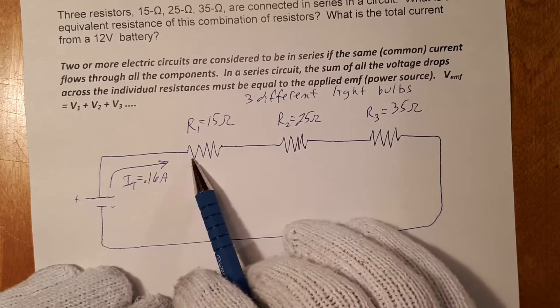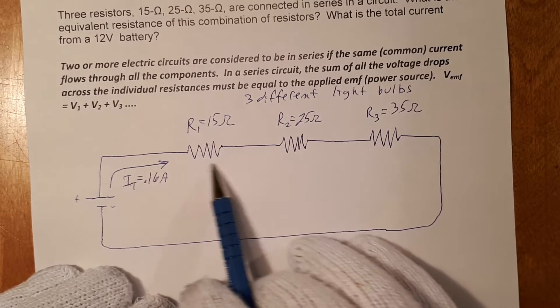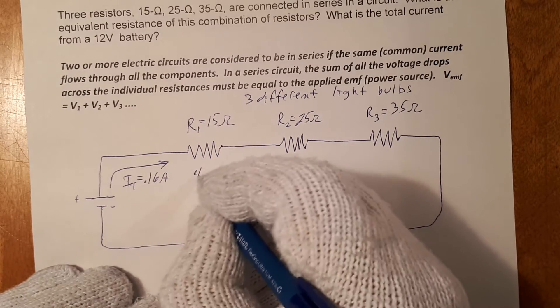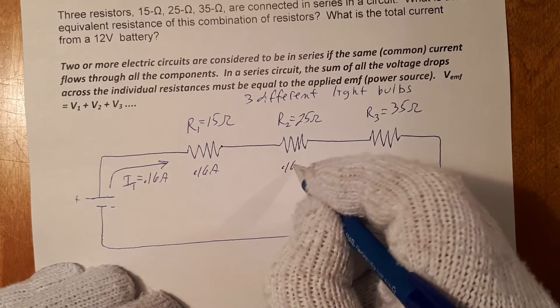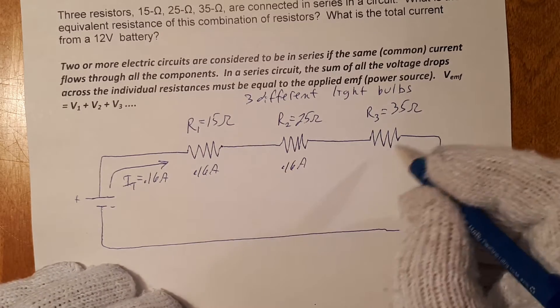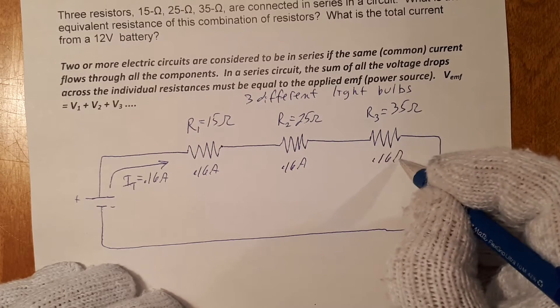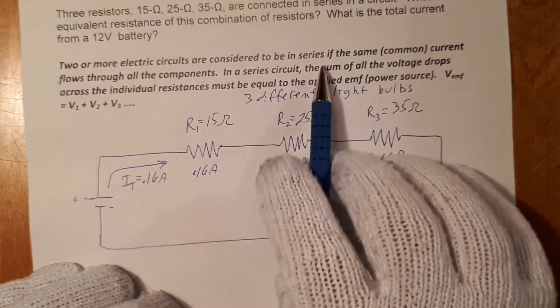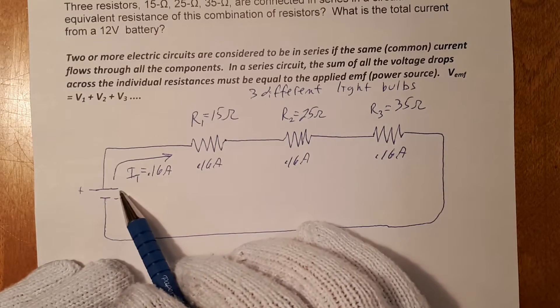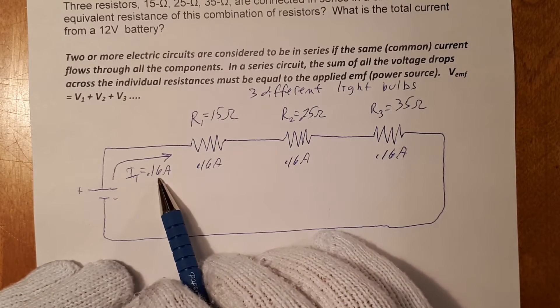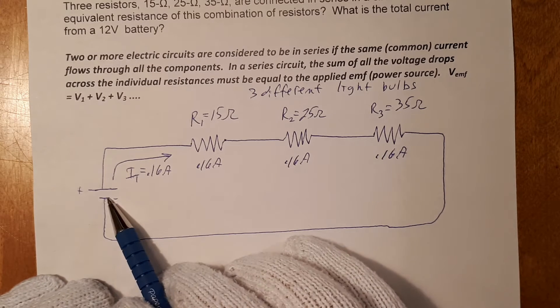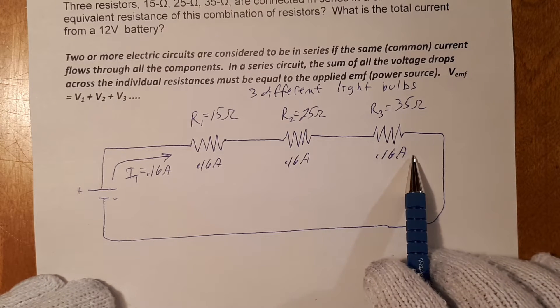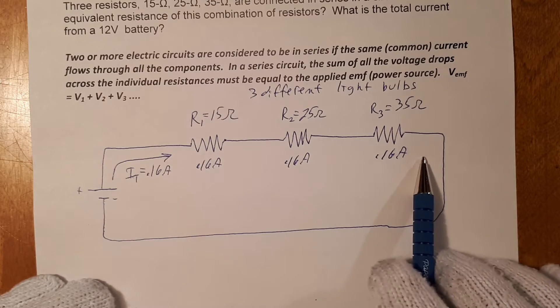And the current is the same throughout. So the current going across this light bulb is also 0.16 amps. And the current going through this light bulb is also 0.16 amps. And going through this light bulb is also 0.16 amps. In a series circuit, the current is common. And the current leaving the battery is 0.16 amps and it travels throughout and back into the battery. So this is the definition of a series circuit.